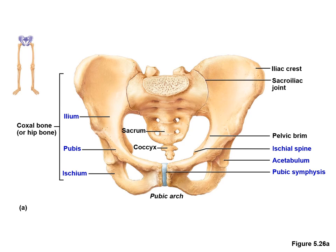Laterally, the ilium, ischium, and pubis come together to form a deep socket known as the acetabulum, which forms the hip joint with the femur. Where the ischium and pubis meet, there is a large hole called the obturator foramen. In a living person, this hole stays covered with a membrane that allows only small blood vessels and nerves to pass through.